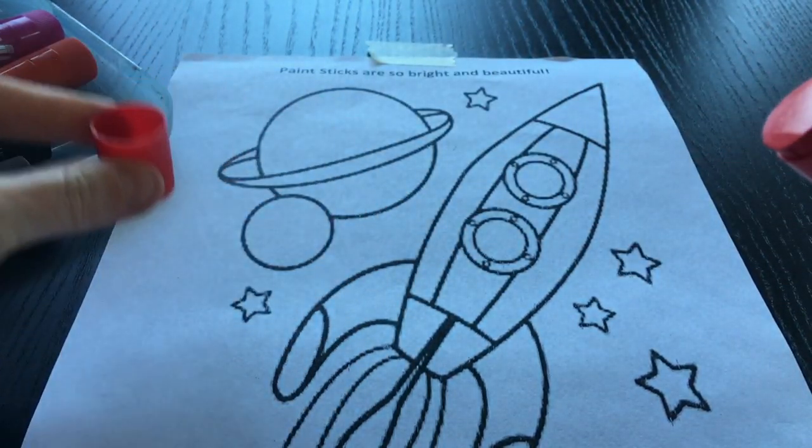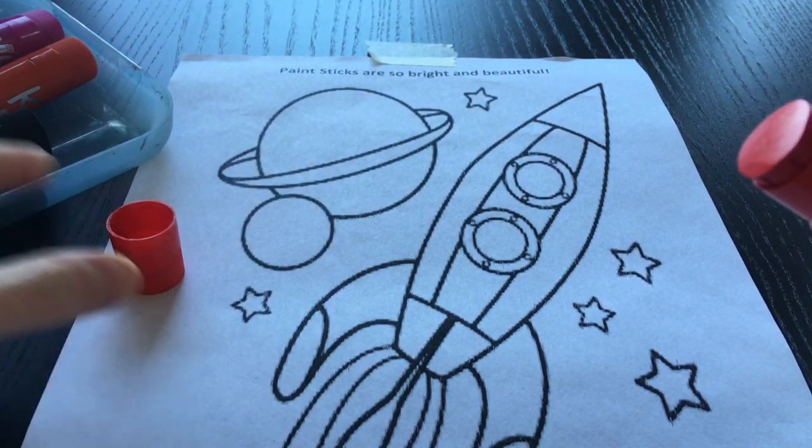So, you start by taking off the cap, and if you put the cap like this on the flat side, then it won't roll away.